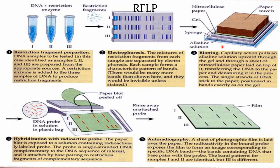This gel is used for Southern blotting. Capillary action pulls an alkaline solution upward through the gel and through a sheet of nitrocellulose paper laid on top of it, transferring the DNA to the paper and denaturing it in the process. Single-stranded DNA sticks to the paper positioned in the bands exactly as on the gel. Next is hybridization with a radioactive probe. The paper blot is exposed to a solution containing a radioactively labelled probe, which is a single-stranded DNA complementary to the DNA sequence of interest, and it attaches by base pairing to restriction fragments of complementary sequence. Unattached probe is then rinsed away.